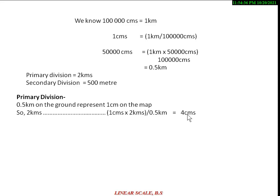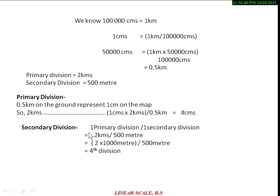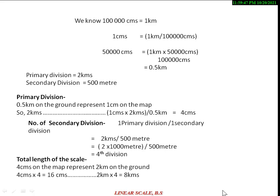Now let's calculate the secondary division. Number of secondary divisions equals one primary division divided by one secondary division value: 2 km divided by 500 meters. Converting to the same unit: 2 km into 1000 meters divided by 500 meters, which gives us 4 divisions.